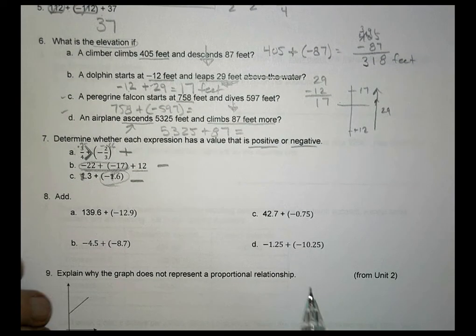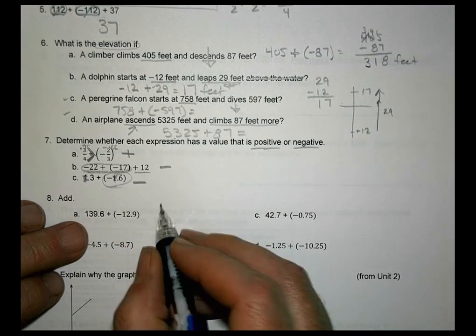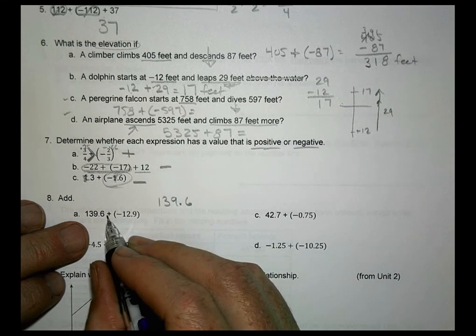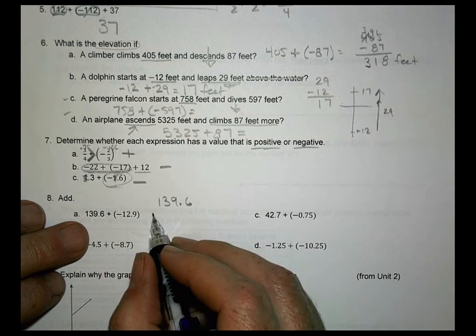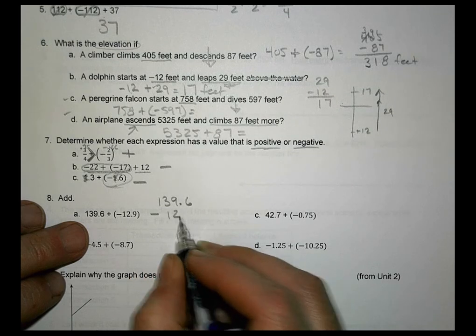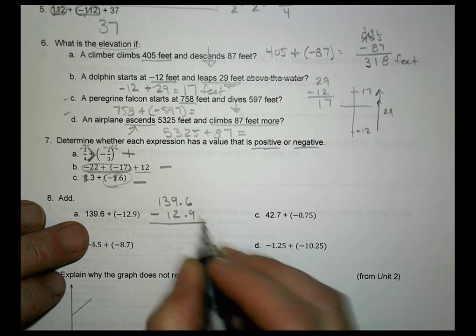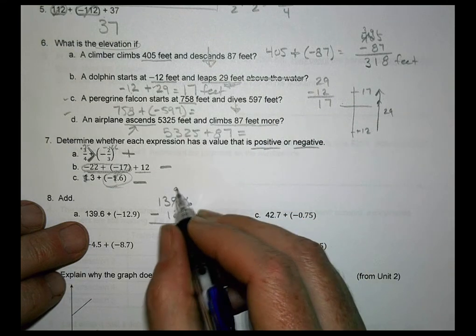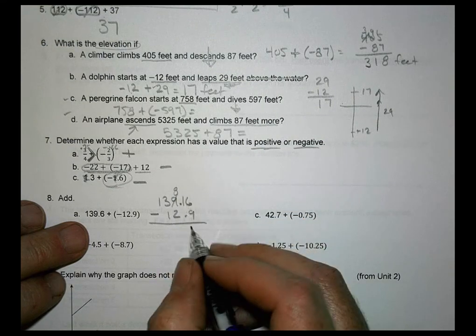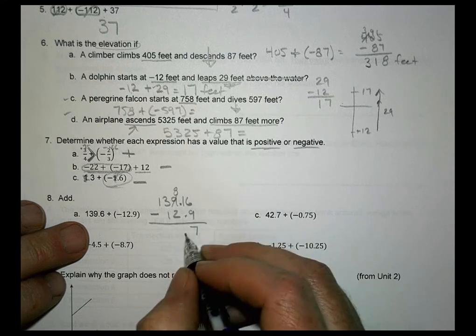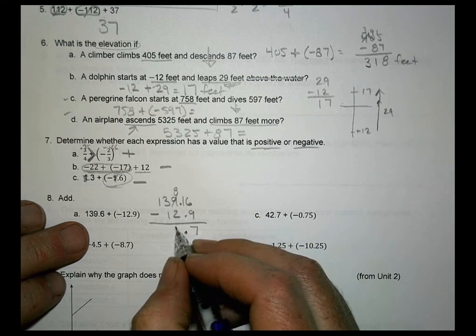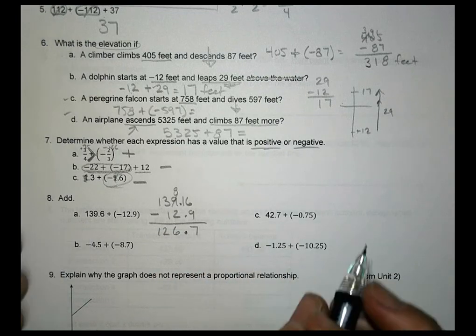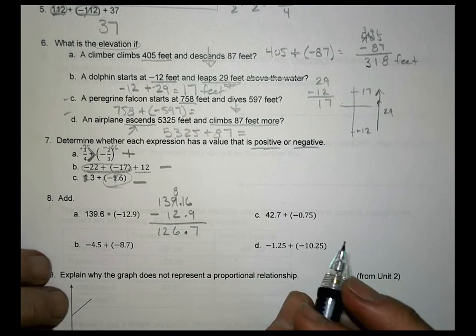Number 8, do a couple of these ones here. Here we have 139.6. And it says add a negative 12.9. So we can go ahead and just subtract 12.9. And make sure you line up your columns the right way, your place value. We're going to borrow here. So 16 minus 9 is 7. The decimal stays where it is. 8 minus 2 is 6. And 13 minus 1 is 12. So we have 126.7.